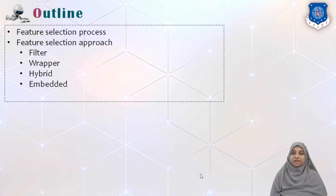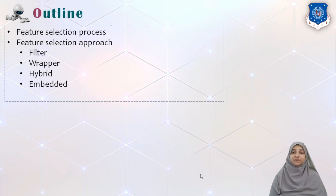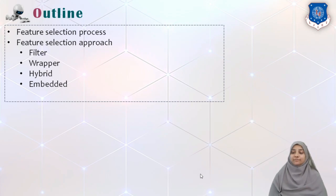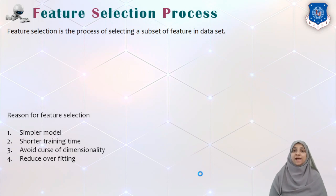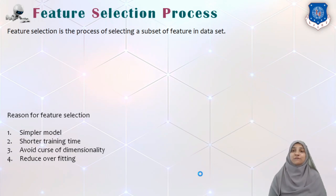Hi, in today's video we are going to look into Feature Selection Process and different Feature Selection Approaches. Feature Selection is also known as Feature Subset Selection. Basically, it is a process of selecting a subset of features from a given dataset.